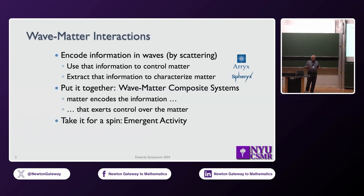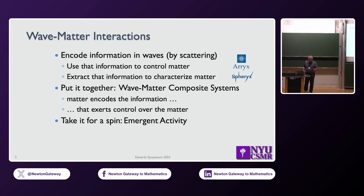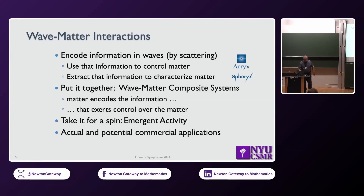That's what we call emergent activity — a mechanism by which a system of passive particles, not active individuals, can become active when they interact with each other through the waves they scatter. Most active matter is made of individually active objects like bacteria or motor proteins, whose collective behavior comes from non-reciprocal interactions. I want to talk about the converse: non-reciprocal interactions among passive things, where that non-reciprocity results in activity. It's an alternative form.